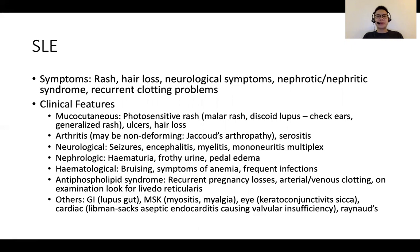There can be serositis as well. In terms of systems affected, these would be the brain, the kidneys, and the hematological system. Neurological manifestations can include seizures, encephalitis, and myelitis. Renal involvement can present as either a nephrotic or nephritic picture. Hematologically, patients can develop bruising disorders or clotting problems when there is associated antiphospholipid syndrome. Hence, it's important to ask for an obstetric history for recurrent pregnancy losses and any features suggesting previous clotting problems.